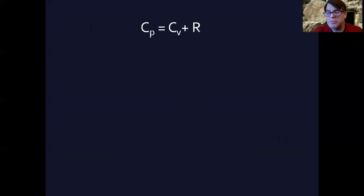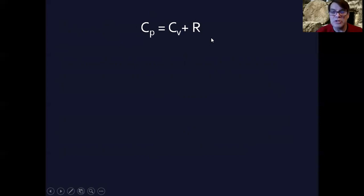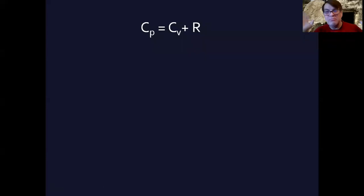Here is the relationship between the molar heat capacity at constant pressure and at constant volume. The difference between the two is the gas constant R — recall from pV = nRT that R = 8.314 joules per mole kelvin. So Cp = Cv + R. You don't necessarily need to know the derivation, but let me show you how it's derived.